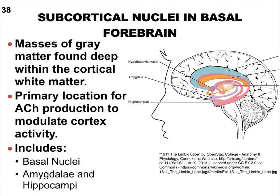We also have projection fibers, which we'll study when we look at the spinal cord — fibers that interconnect the brain and the spinal cord. A good example is the pyramids, which are projection fiber tracts that cross over in the medulla oblongata, the most inferior portion of the brain. Most tracts you'll see actually cross over in the spinal cord, so keep that in mind.